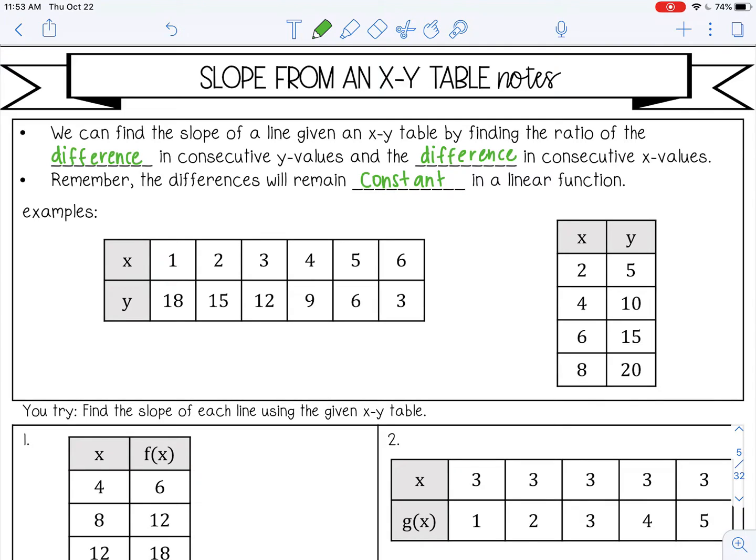So we want to find the difference in consecutive y values. So I always do the y first. So from 18 to 15, first of all, I'm subtracting and I'm subtracting three. So I'm going to put minus three. And if you want to do another one, just in case to make sure 15 minus three is 12. And they should all be the same because it's linear.